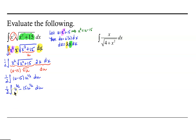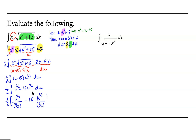Now we're ready to find the antiderivative, basically inverting the power rule. So one-half times the antiderivative of u to the three-halves: I add one to the exponent, giving me u to the five-halves, divided by five-halves. Then minus 15 times — adding one to the exponent one-half gives me three-halves — so u to the three-halves divided by three-halves, plus our constant of integration.